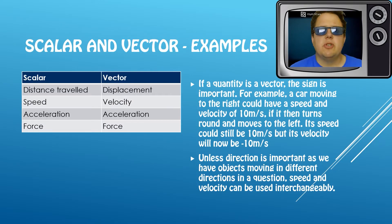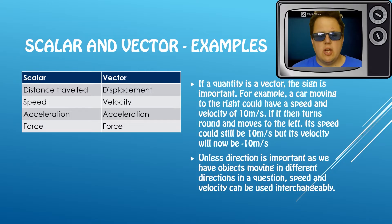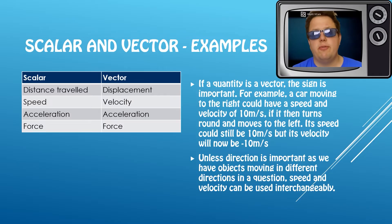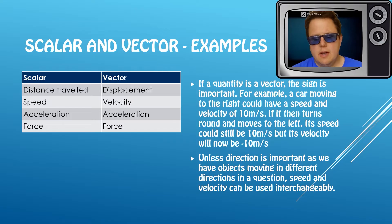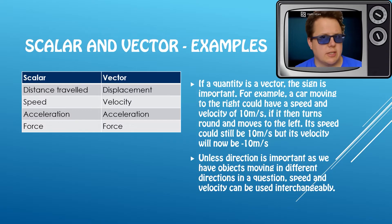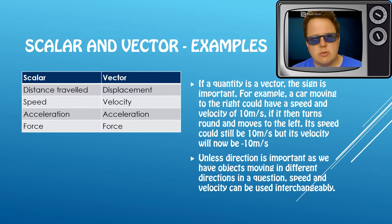Some key examples of scalars and vectors, and it's important to know the comparisons between the two. For a scalar we talk about distance traveled; for a vector we talk about displacement. Speed and velocity I've just spoken about. Acceleration and force — we almost always talk about these as vectors because we care about their direction. As it says here, unless direction is important, generally you'll see speed and velocity used interchangeably. The minute direction becomes important, we obviously have to use the correct terms.